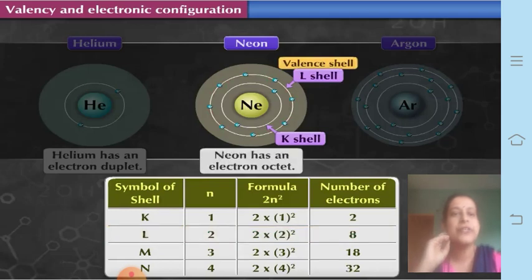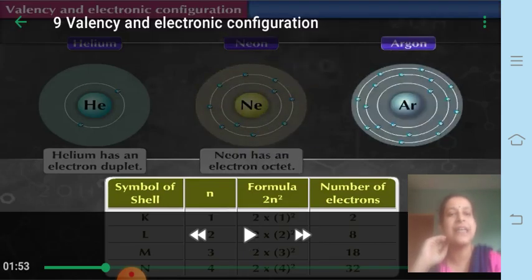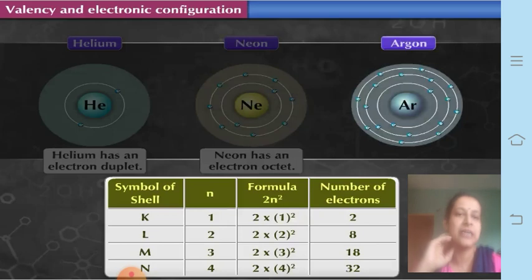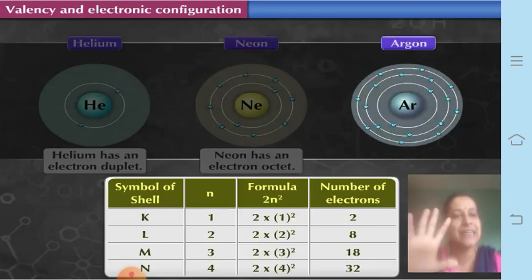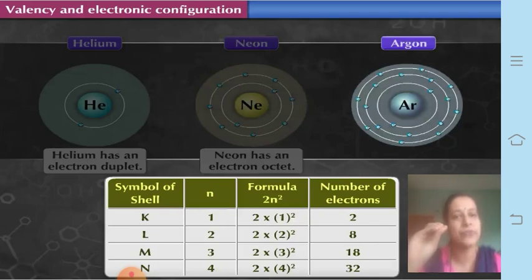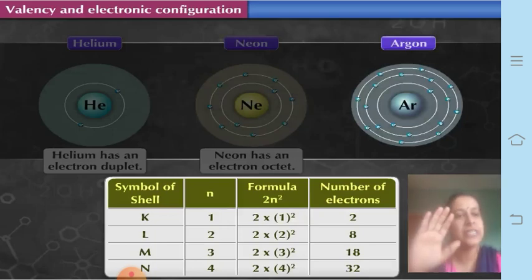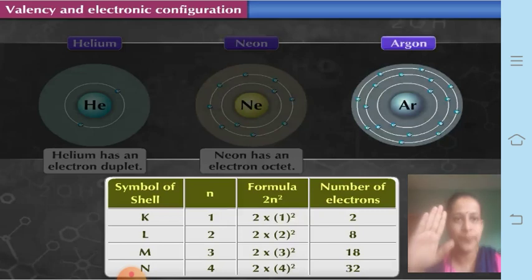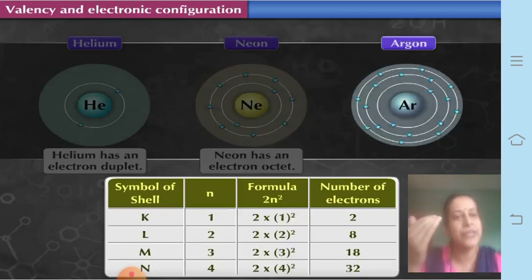Neon has an electron octet. The L shell, which is neon's valence shell, has 8 electrons — the maximum capacity of the L shell. So we say that neon has an octet.